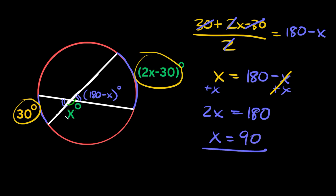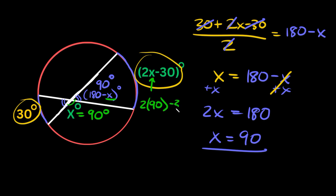So this missing angle X is equal to 90 degrees. Plugging 90 in for the blue angle gives 180 minus 90, which is also 90 degrees. And plugging 90 in for the arc measure gives 2 times 90 minus 30 — that's 180 minus 30 — which equals 150 degrees.